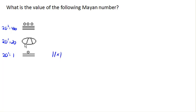And this symbol, which is intended to look like a shell, is the placeholder, or 0 value, in the Mayan system. So we have 0 twenties in this case.